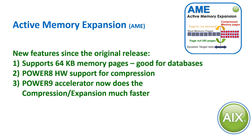Looking at the new features: we now have 64 kilobyte memory pages supported, which is particularly good for databases that like using bigger pages. With Power 8, we had hardware support for compression, meaning we could compress 64k pages much quicker. With the Power 9 introduction, we now have a full-blown accelerator in the chip that does this a lot faster. This means we get the benefits of extra memory without the cost of using the main CPUs for compression and decompression — more memory, less CPU hit.